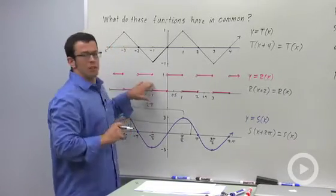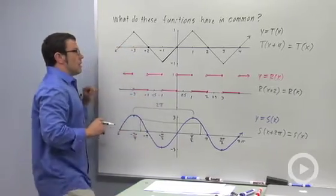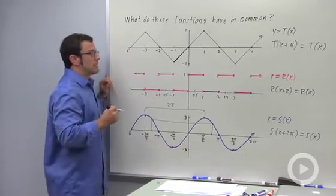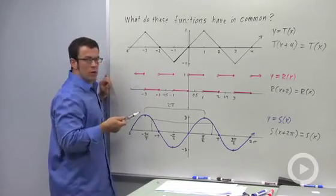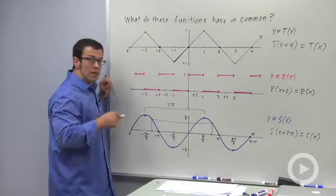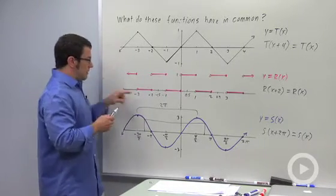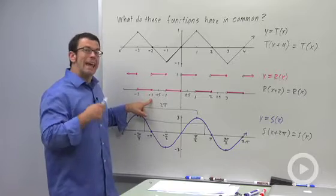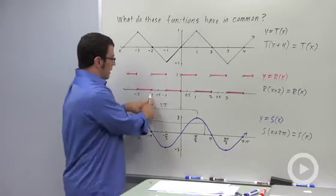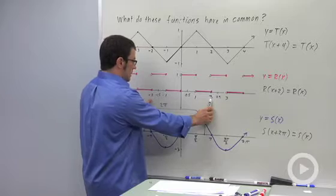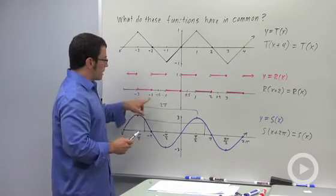Now, let me briefly return to this function for a second. I want you to observe that sometimes when you find the value of p that works, in this case it was 2, sometimes a larger value will also work. For example, notice that if I start at negative 2, I can add 4 and get to the same output, and that will also work at other points.